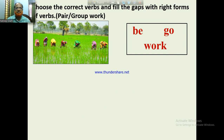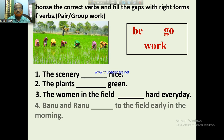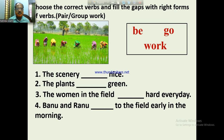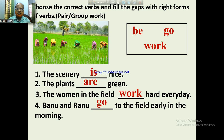Choose the correct verbs and fill in the gaps with right forms of verb. The scenery — dash — nice. The plants — dash — green. The women in the field — dash — harvest every day. Vanu and Ranu — dash — to the field early in the morning. Answers: The scenery is nice. The plants are green. The women in the field work every day. Vanu and Ranu go to the field early in the morning.